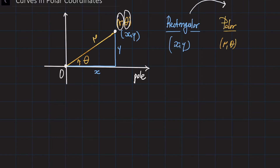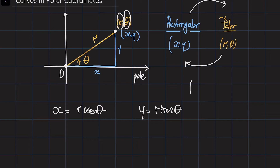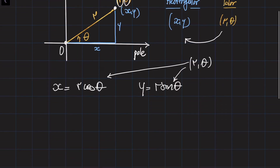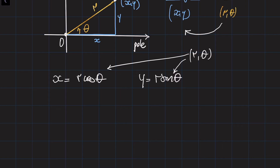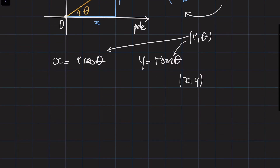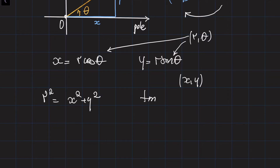We've learned about the correspondence between polar and rectangular coordinates. We can do this using the equations: x equals r times cosine of theta, and y equals r times sine of theta. If you're given x and y coordinates, substitute them into r squared equals x squared plus y squared, and tangent of theta equals y divided by x, to find the polar coordinates.